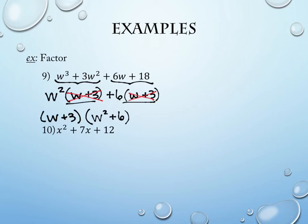This last example — a trinomial — we've previously solved with trial and error or the AC method. The AC method is especially valuable and it uses factoring by grouping at its core. If you prefer trial and error, that's fine too — instructions won't specify which method to use.